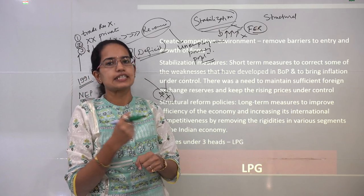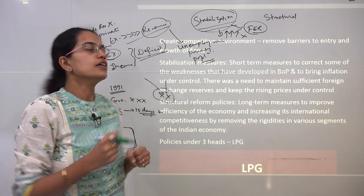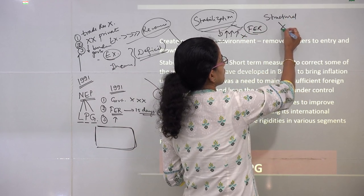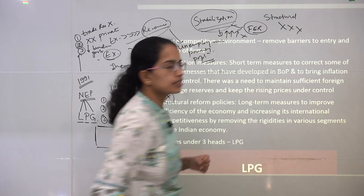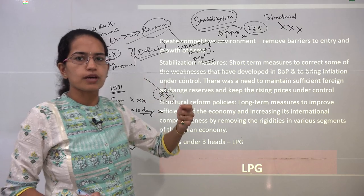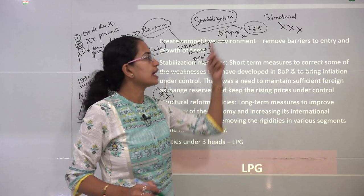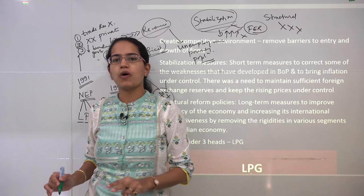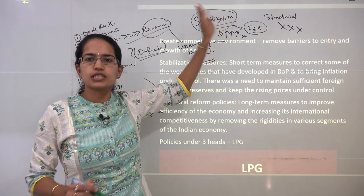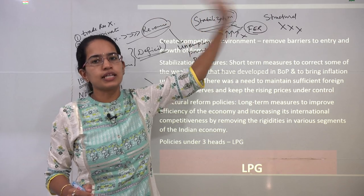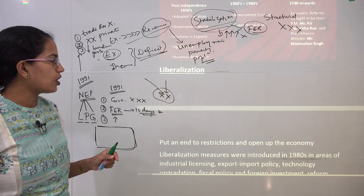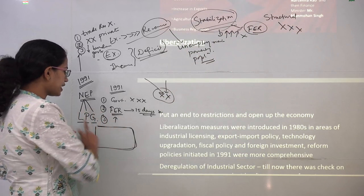Under the structural method, the aim was removing rigidities that exist in the Indian economy. All kinds of barriers — trade licensing and similar issues — were gradually removed. These were the structural changes brought about in the Indian economy. Therefore, we say the New Economic Policy was based on two pillars: the stabilization method and the structural measures.